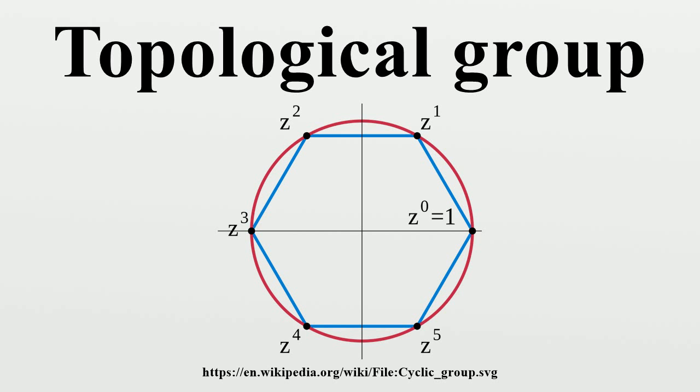As a uniform space, every topological group is completely regular. It follows that if a topological group is T0 then it is already T2, even T3½.